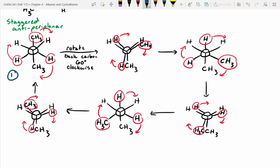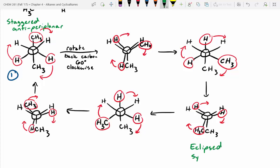Which one is least stable? The bottom right — because they're eclipsed and the methyl groups are as close to each other as possible. We're forcing the two methyl groups to basically overlap one another. This one is called eclipsed syn-periplanar, because those two methyl groups are in the same plane at the same time.